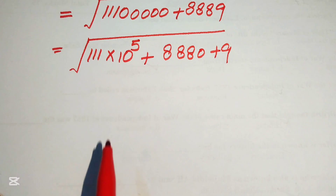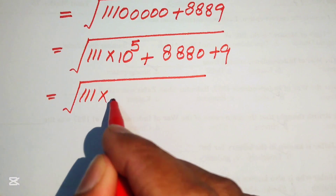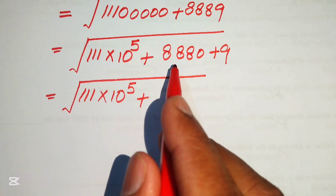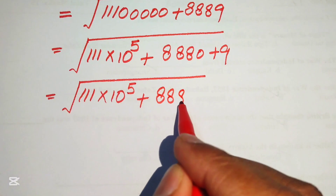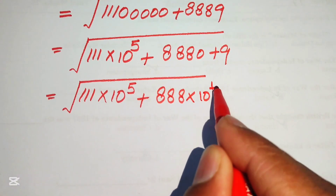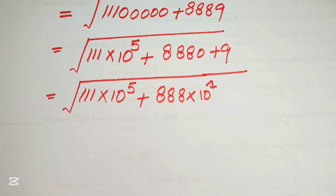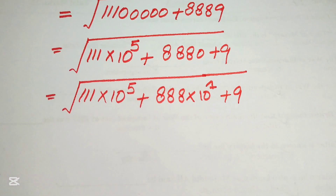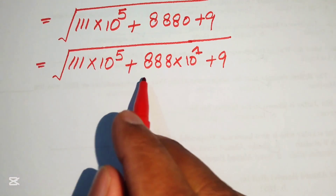After this step we again rewrite this expression: triple one (111) multiplied by ten raised to power zero, plus we write triple eight (888) as triple eight multiplied by ten raised to power one — writing this number into scientific notation form. After that we have plus nine.